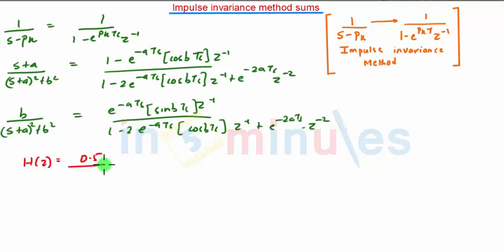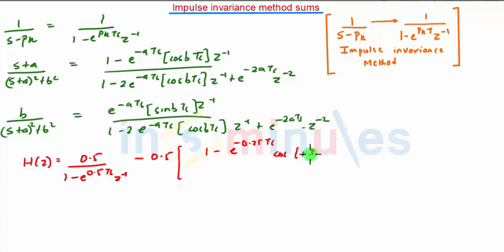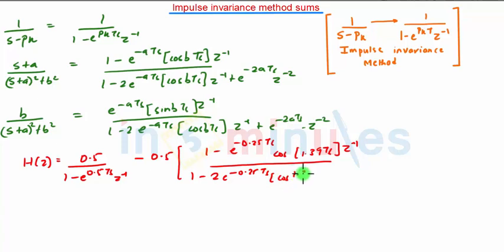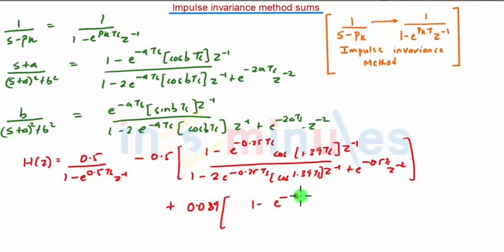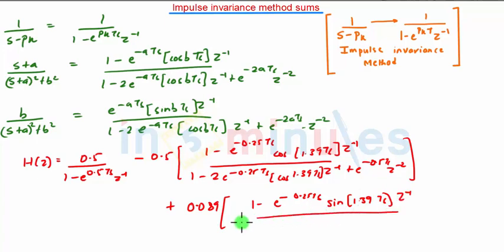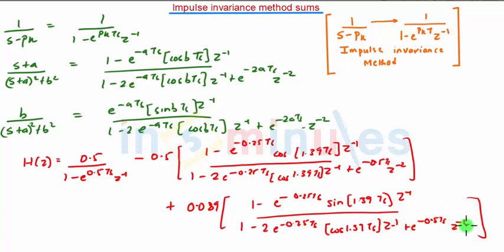H(z) is equal to 0.5 upon (1 minus e raised to minus 0.5·Ts · z raised to minus 1), minus 0.5 into (1 minus e raised to minus 0.25·Ts · cos(1.39·Ts) · z raised to minus 1) upon (1 minus 2·e raised to minus 0.25·Ts · cos(1.39·Ts) · z raised to minus 1 plus e raised to minus 0.5·Ts · z raised to minus 2), plus 0.089 into e raised to minus 0.25·Ts · sin(1.39·Ts) · z raised to minus 1 upon (1 minus 2·e raised to minus 0.25·Ts · cos(1.39·Ts) · z raised to minus 1 plus e raised to minus 0.5·Ts · z raised to minus 2). This is the final answer, H(z).